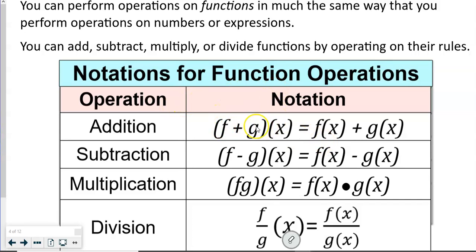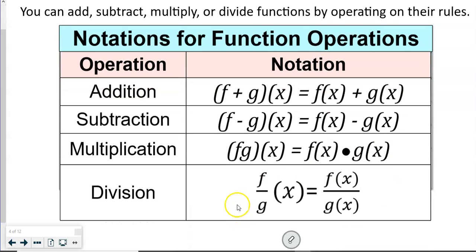To add, we compute f plus g of x, meaning f(x) plus g(x). To subtract, we compute f minus g of x. For multiplication, f times g of x means f(x) times g(x), and we'll use the box method for that. For division, we divide f(x) by g(x) — we can factor the numerator and denominator to see what cancels, or sometimes we'll need to use synthetic division.